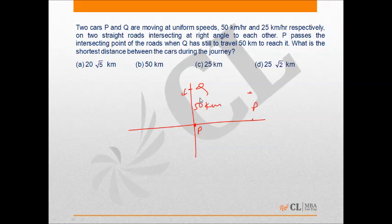What is the shortest distance between the cars during the journey? We have to find the shortest distance between the cars during the journey. So let after t minutes the two cars will be at minimum possible distance from the time when P is at point of intersection.